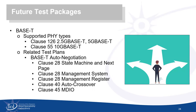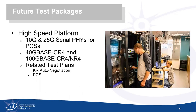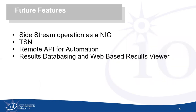We'll also be enhancing our BASE-T support by adding 2.5G, 5G, and 10GBASE-T, and importing our current BASE-T auto-negotiation test tool into Bitfire so all those test plans run on a single platform. Once low-speed technologies are complete, we'll ramp up to 10G and 25G serial PHYs, enabling related test plans for auto-negotiation, PCS, and MAC and flow testing. Additional features include treating Bitfire as a NIC with sidestream operation, TSN support, a remote API for automation and better integration into your testing environment, and a results database with a web-based results viewer.